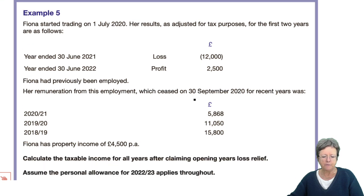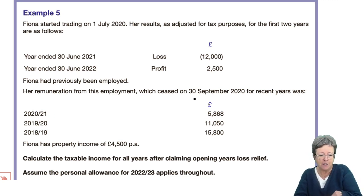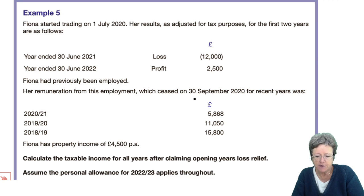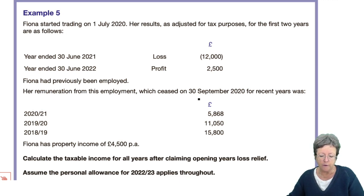Now Example 5 — Fiona started trading on the 1st of July 2020. Her results as adjusted for tax purposes for the first two years: in the first year she made a loss of £12,000, and in the second year to June 2022 she made a profit of £2,500. She'd previously been employed — her remuneration ceased in September 2020. She also has property income. We are to calculate the taxable income for all years after claiming opening year's loss relief.